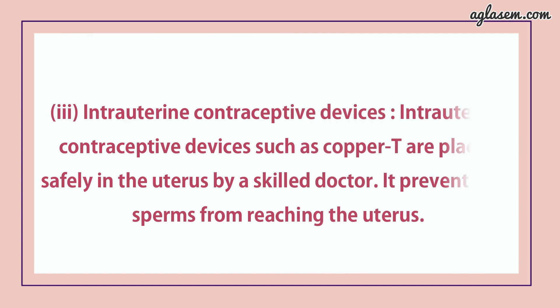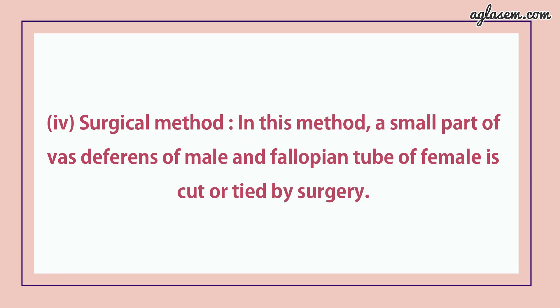Third is the intrauterine contraceptive device. Intrauterine contraceptive devices such as Copper-T are placed safely in the uterus by a skilled doctor; it prevents the sperm from reaching the uterus. Fourth, surgical method — in this method, a small part of the vas deferens of the male and the fallopian tube of the female is cut or tied by surgery.